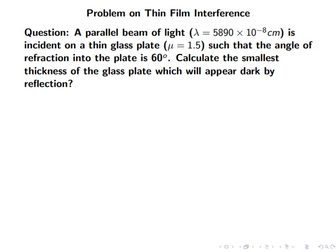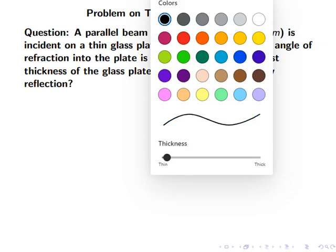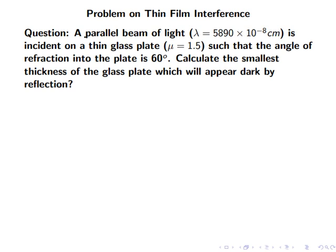In this problem, the question is this: A parallel beam of light which has wavelength 5890 × 10⁻⁸ cm is incident on a thin glass plate of refractive index μ = 1.5 such that the angle of refraction into the plate is 60°. Calculate the smallest thickness of the glass plate which will appear dark by reflection.